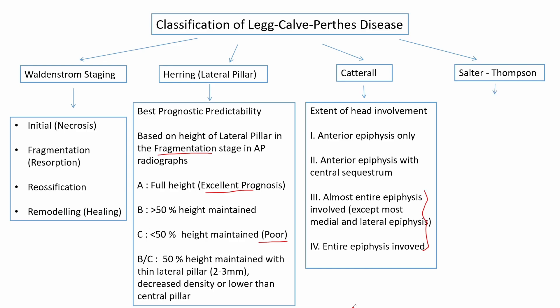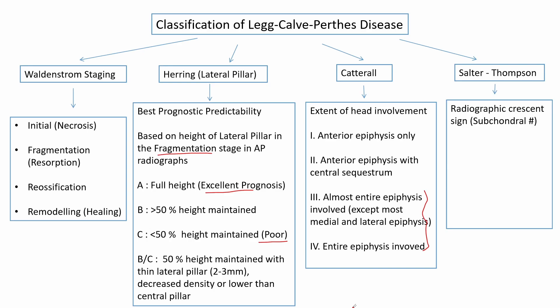The Salter-Thompson classification is based on the radiographic crescent sign, which is a subchondral fracture in the supralateral part of the femoral head. It is divided into class A if the crescent sign or subchondral fracture involves less than half of the femoral head, and class B if it involves more than half. Class A has excellent to good prognosis, whereas class B has a poor prognosis.